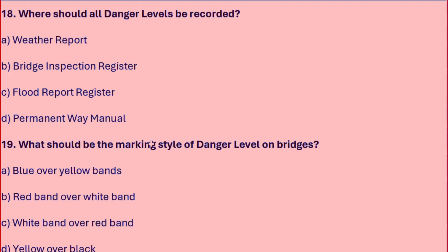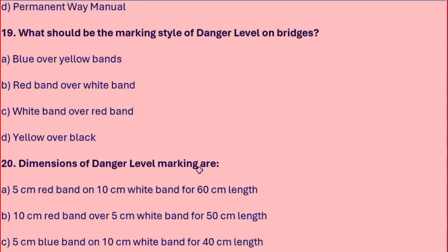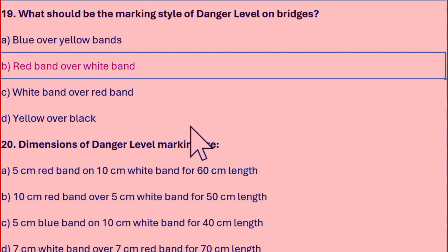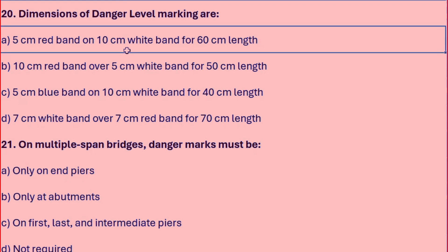All danger levels should be recorded in the bridge inspection register. The danger level on bridges is marked as a red band over a white band. The dimension of the danger level marking is a 5cm red band on a 10cm white band for a 60cm length.